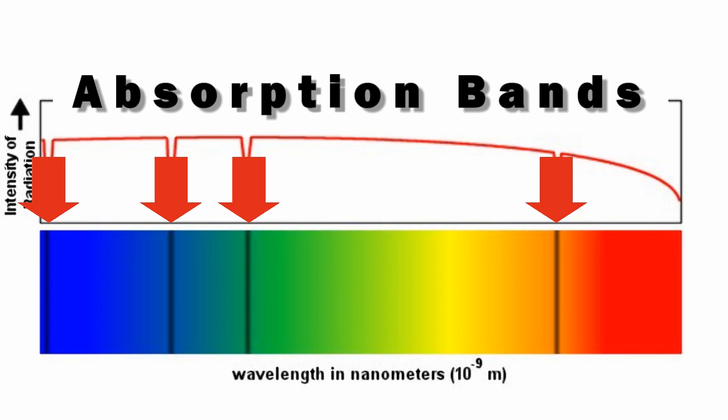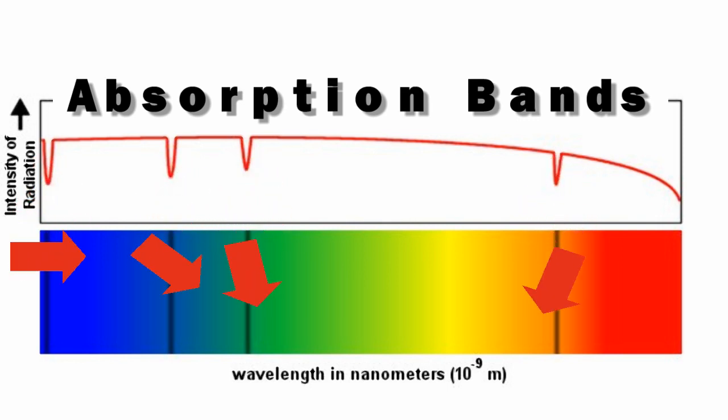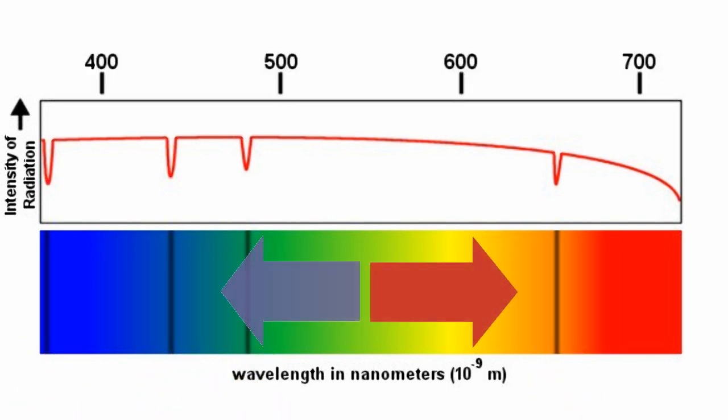However, nearly all the energy absorbed by atmospheric gases occurs outside of the visible spectrum, in the ultraviolet and infrared ranges.